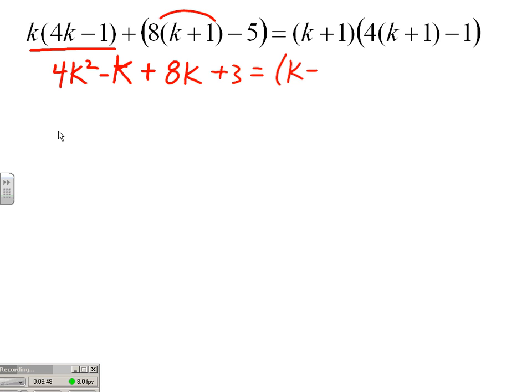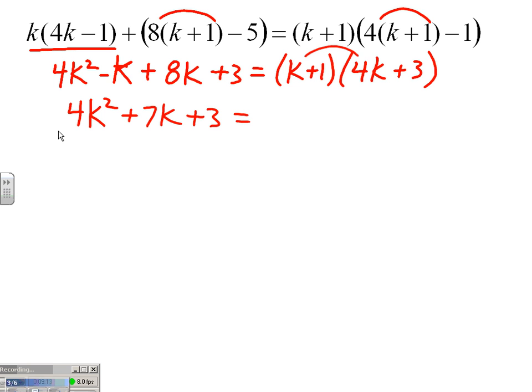Over here, I'll start my simplifying: k plus 1 times 4k, distribute, plus 4 but minus 1 plus 3. And left side, 4k squared, I've got a minus k and a plus 8k, that's plus 7k plus 3.